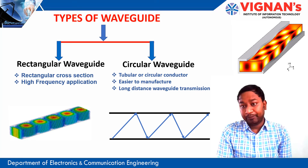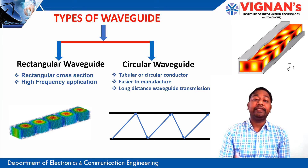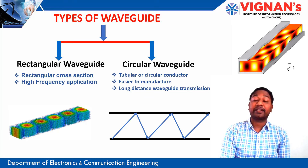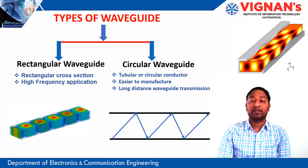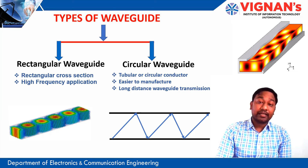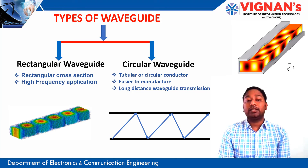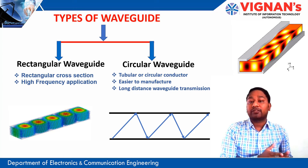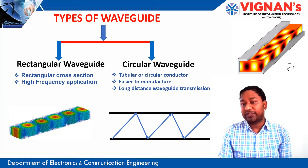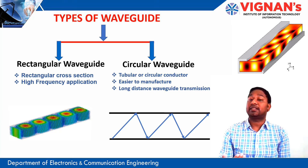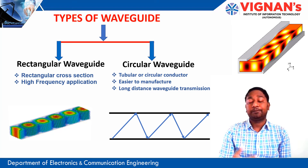In a transmission line, the transverse electromagnetic (TEM) mode is supported, as well as transverse electric (TE) and transverse magnetic (TM) modes. However, in a waveguide, TEM mode is not supported — only TE or TM modes are supported. Also, waveguides do not work below a certain frequency called the cutoff frequency; propagation begins only above the cutoff frequency, and the waveguide operates within specific mode-dependent frequency ranges.